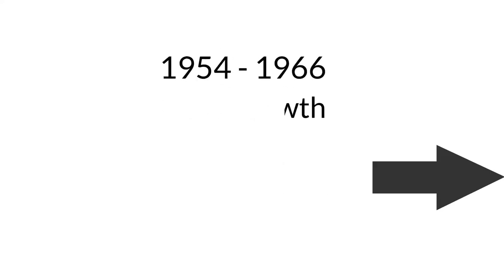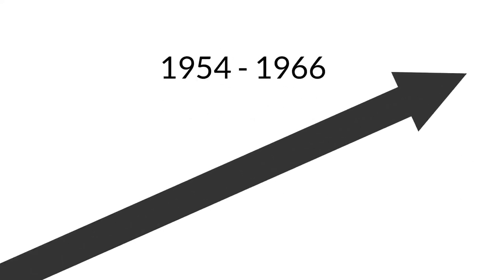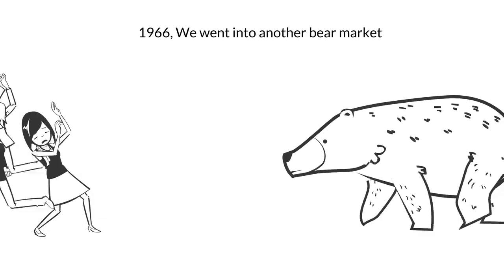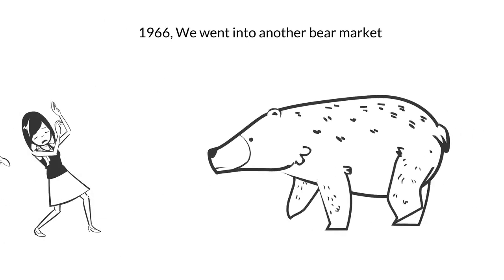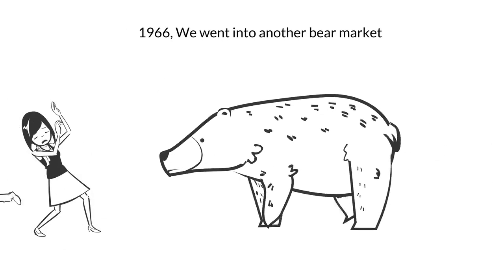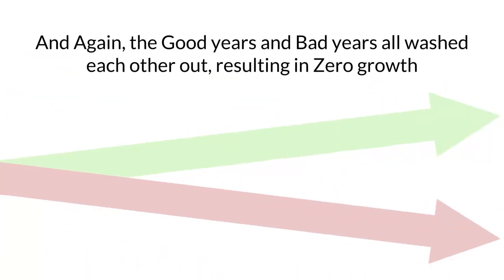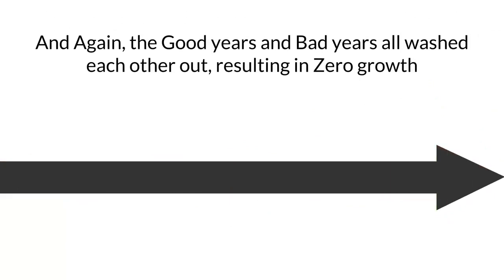After that, from 1954 to 1966, America was on top of its game and the markets did well again. However, in 1966, we went into another bear market, one of the shortest in U.S. history, until 1982. Once again, the good years and bad years all canceled each other out, resulting in zero growth during that 17-year period.